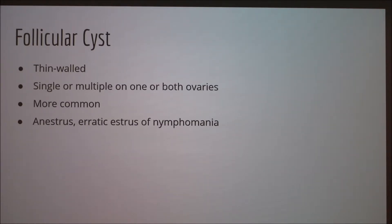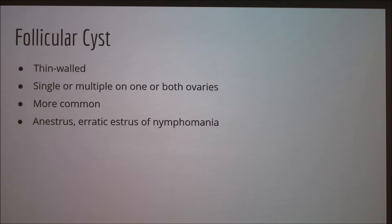Going a little deeper into what exactly a follicular cyst is: it is thin-walled with a thickened theca layer that has a variable amount of granulosa cells. It can appear on one or both ovaries, and this type of cyst accounts for approximately 70% of the cases that we observe.